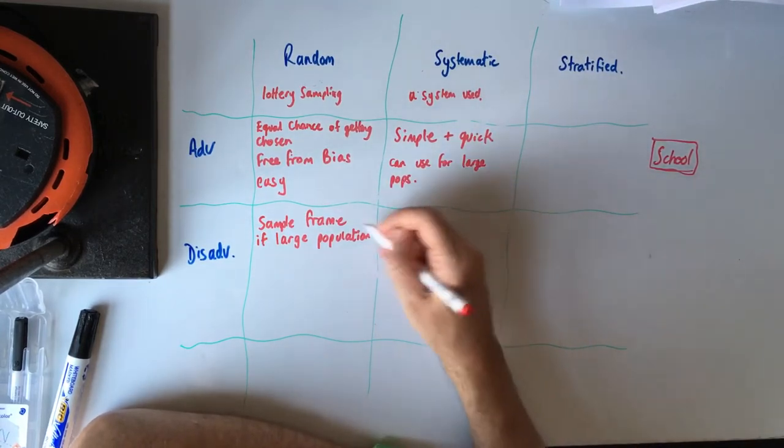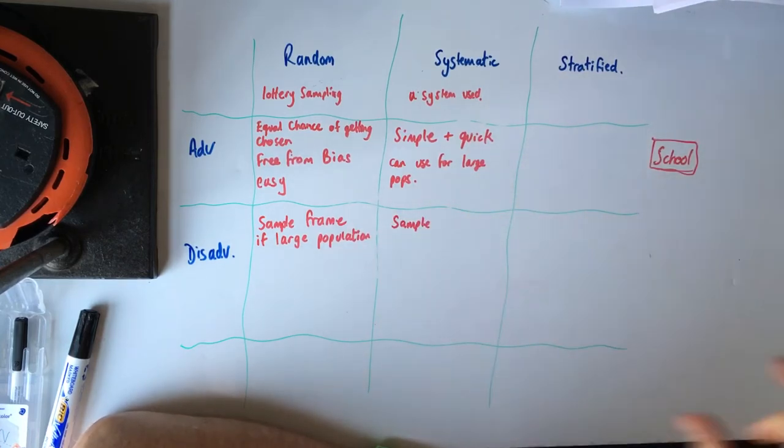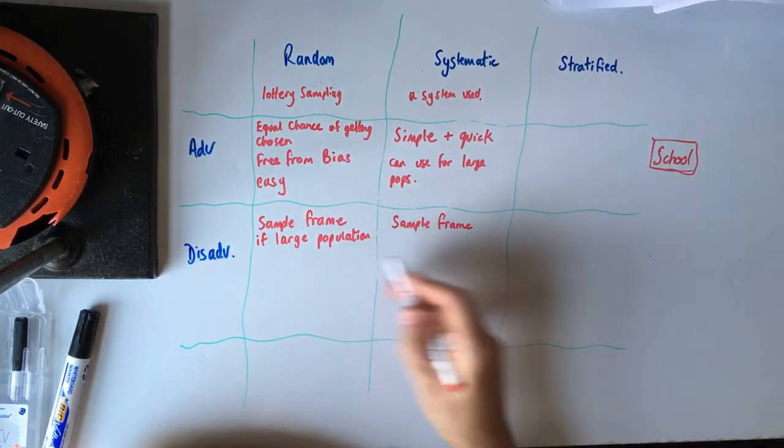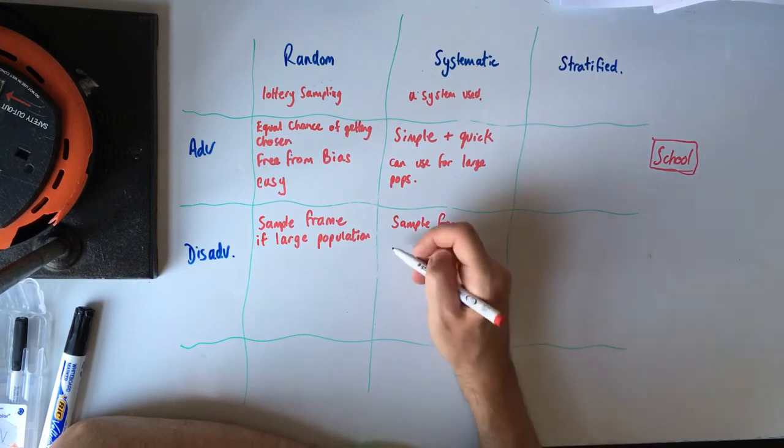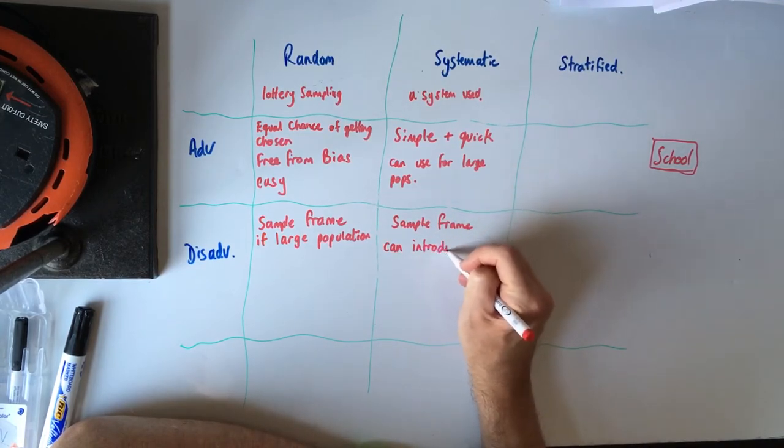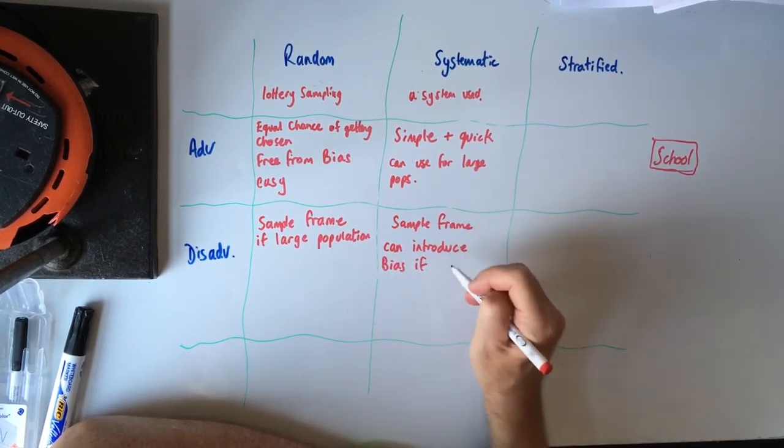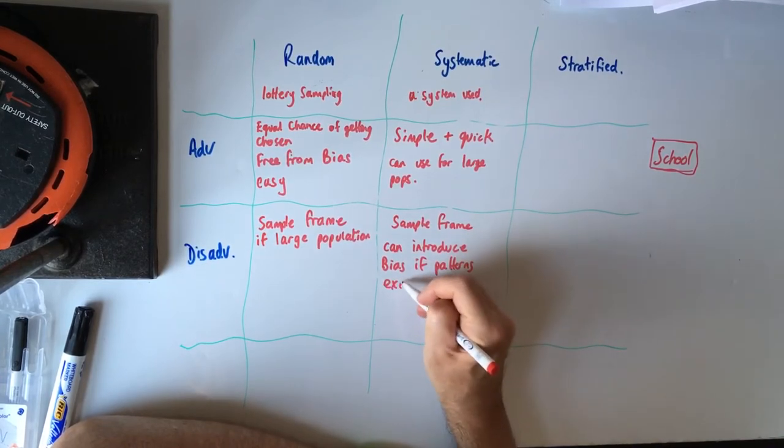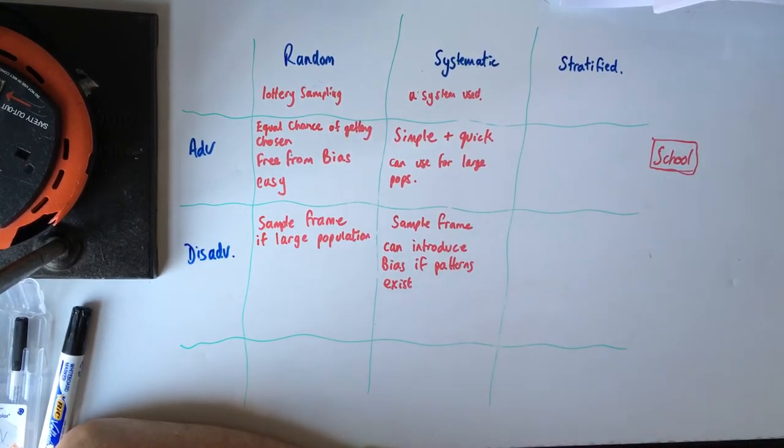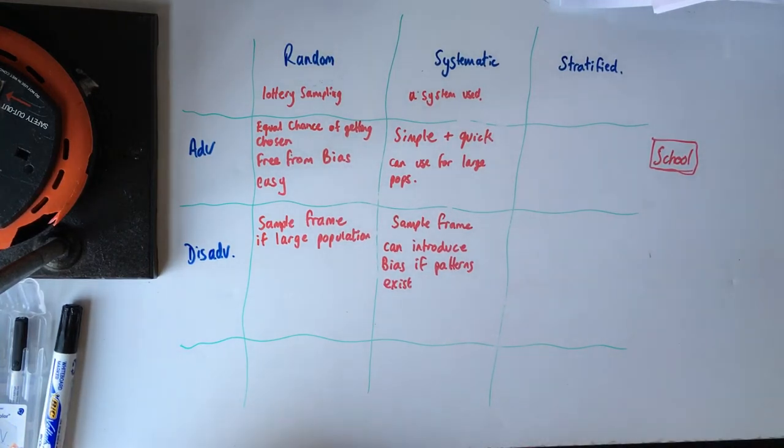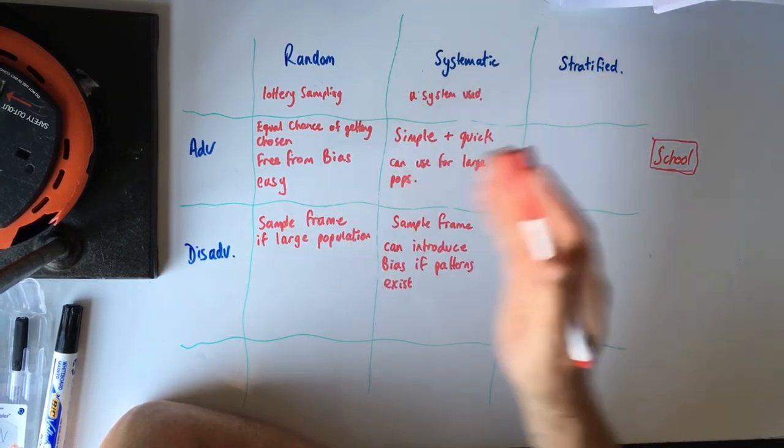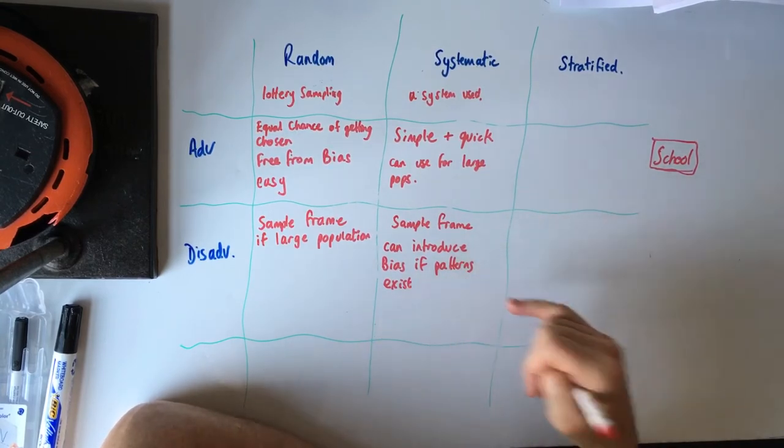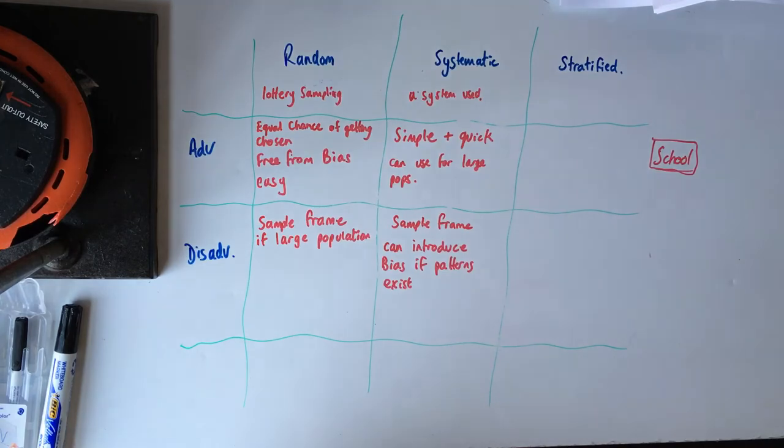But again, you've got that same problem, haven't you? That actually, sample frame is needed. You need data on all of those people to be able to choose them. Can be a problem if the population is too large. And not so sure I'd agree with this really, but they do say that it can introduce bias if patterns exist because you're choosing every 30th person or something like that. If there's a pattern in the data, you're going to be picking up on that pattern. So bias, if patterns exist, you can introduce a bias if patterns exist and then it's not random.